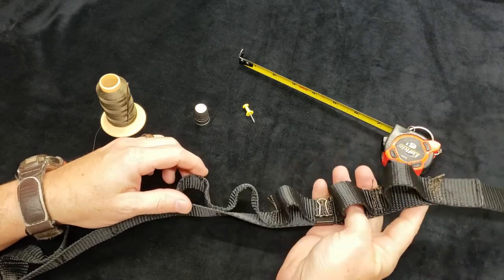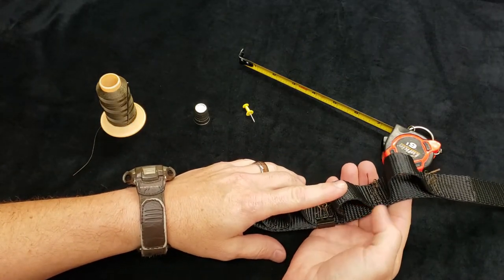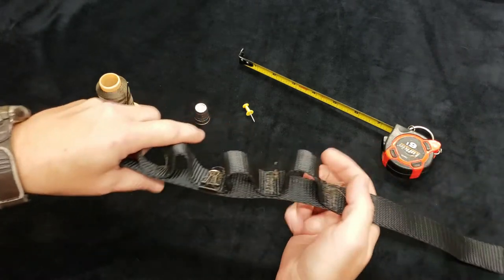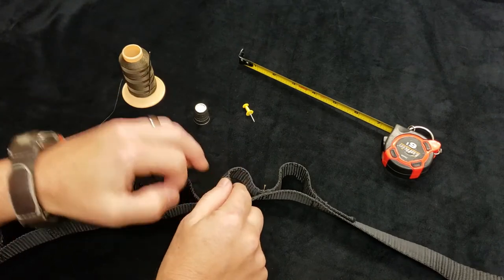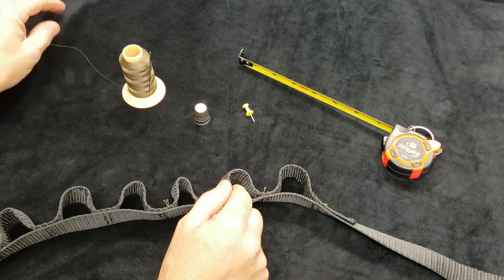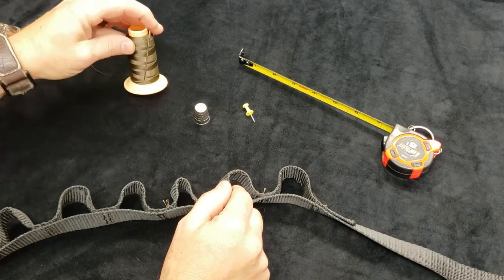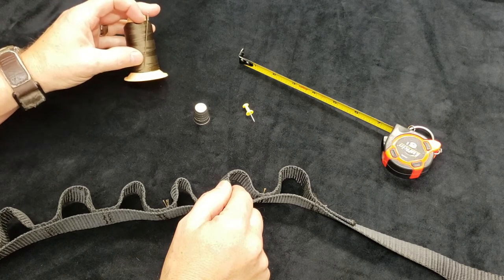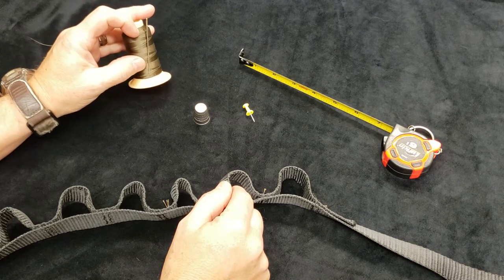You're going to need more of the webbing to do the loop. And you also need from your craft store some upholstery strength thread, some really strong thread for sewing upholstery. And you'll need a needle about like this, pretty strong, not one of the small needles but a strong one that can punch through the webbing fairly easy.